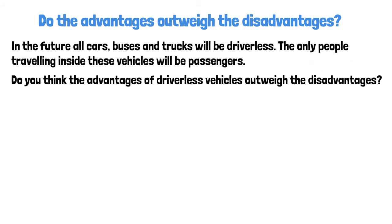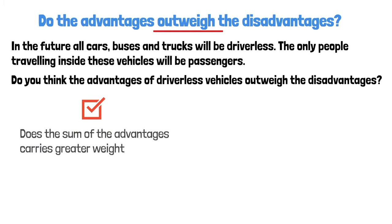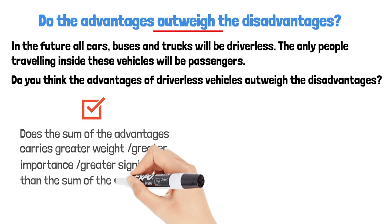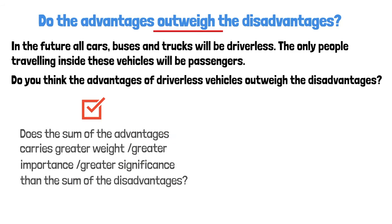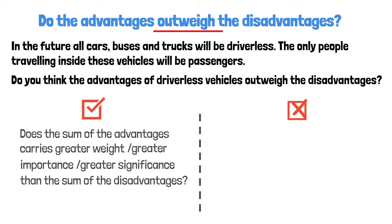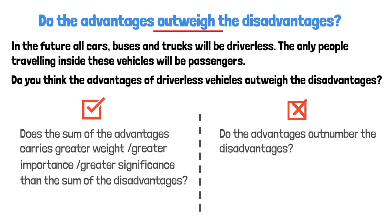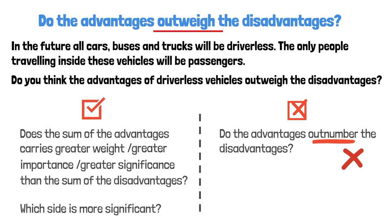First of all, very important — you need to understand what 'outweigh' means. The use of 'outweigh' means they are asking if the sum of the advantages carries greater weight, greater importance, or greater significance than the sum of the disadvantages. In other words, they are not asking you to count how many advantages and disadvantages there are. They are asking which side is more significant.